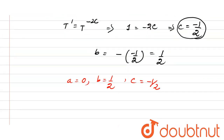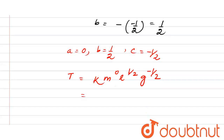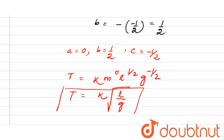Substituting the values, we get T = k · m^0 · l^(1/2) · g^(-1/2). Since m^0 = 1, this simplifies to T = k · √(l/g). This is the required expression, where k is a non-dimensional constant whose value cannot be determined from dimensional analysis and must be found by some other method.